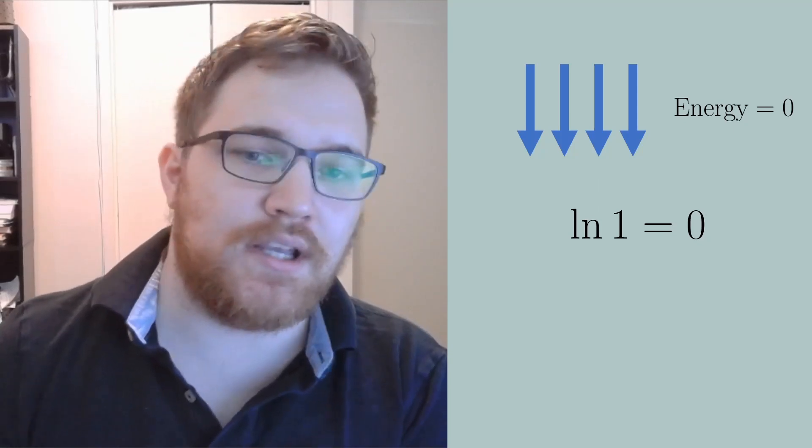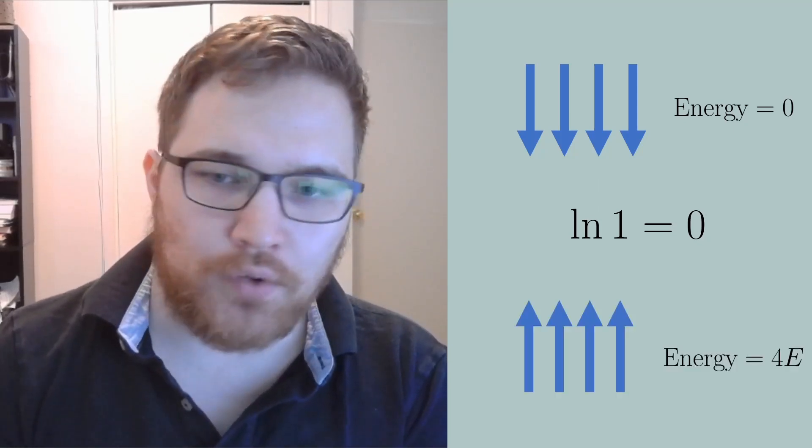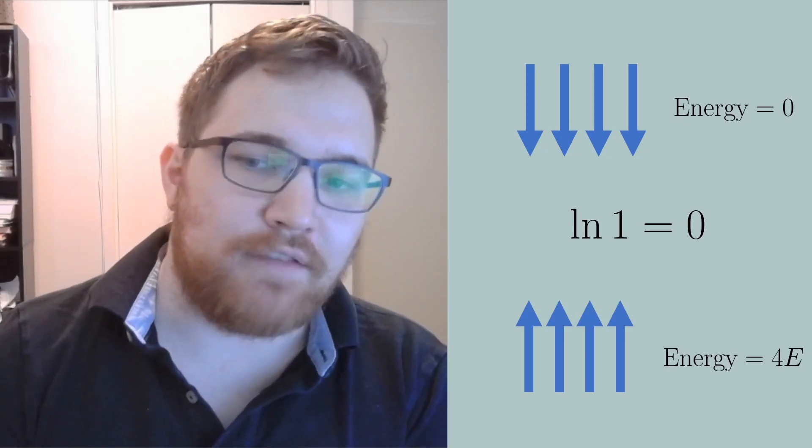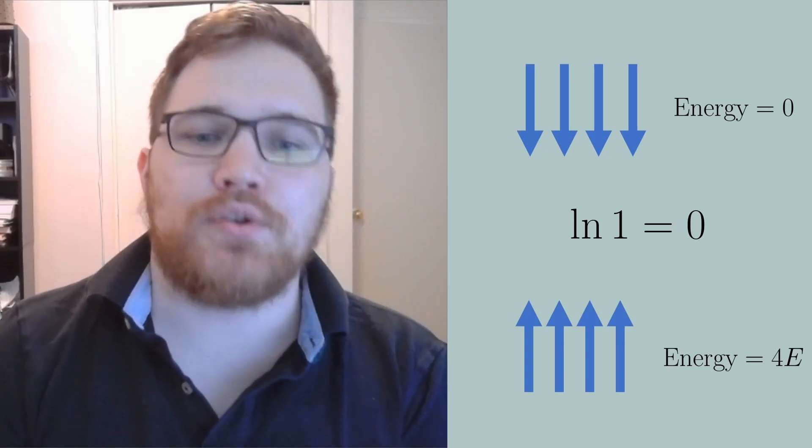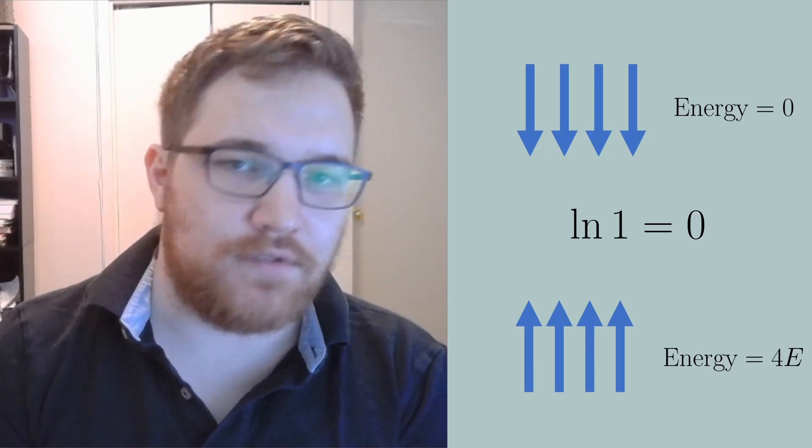Now the highest energy state is constructed with all the spins being up. We get 4E as our energy. This state is also unique and corresponds to an entropy of zero as well. In fact, if we let n be the number of spins, the maximum energy microstate is always all spins pointing up.